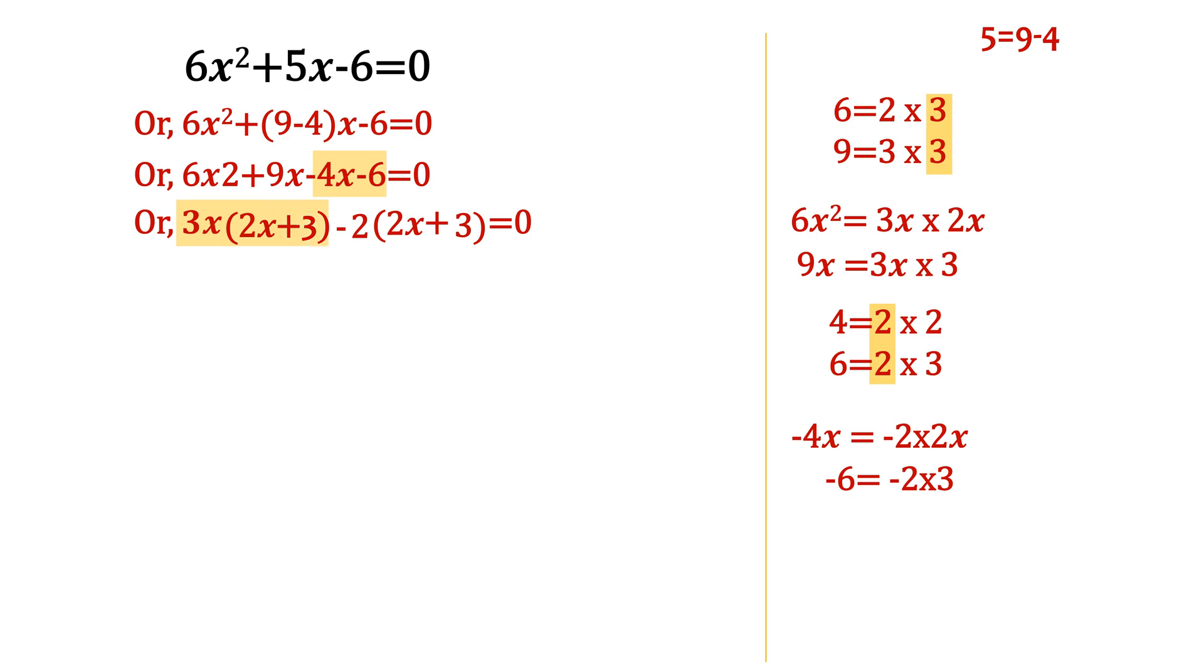Here, we can see two terms. First one is 3x(2x + 3) and second one is -2(2x + 3). Both of these have a 2x + 3 in them. So we again factorize these terms and take commons outside the bracket and this gives us (2x + 3)(3x - 2) = 0.